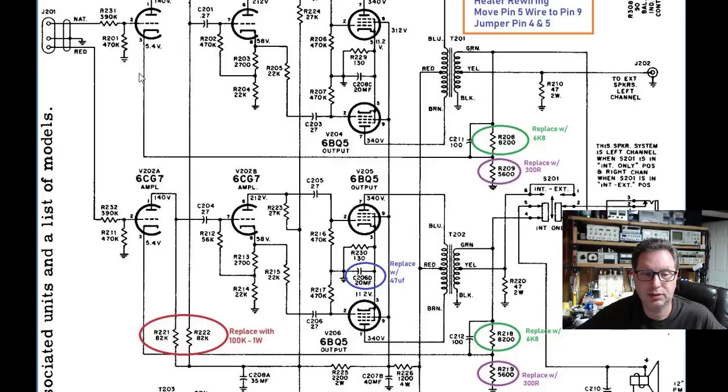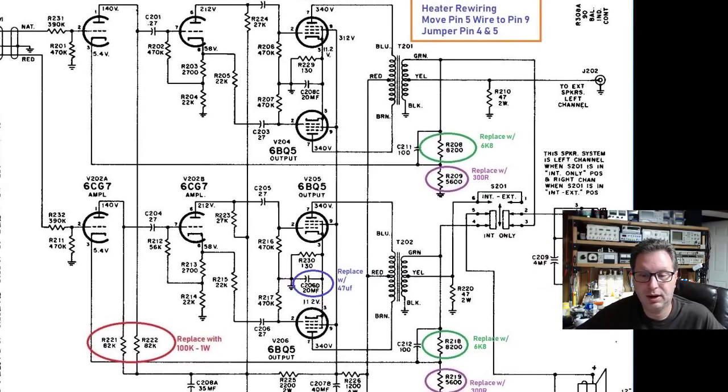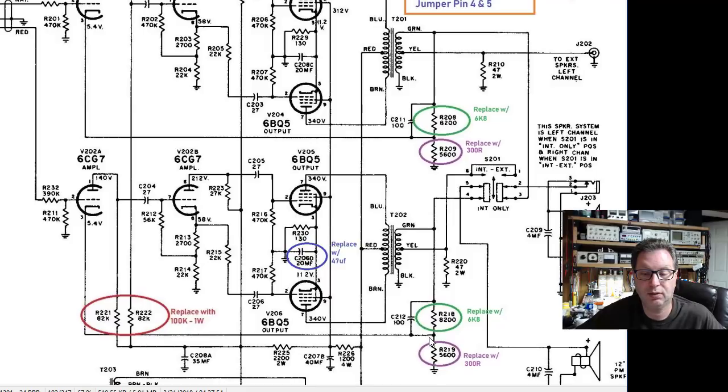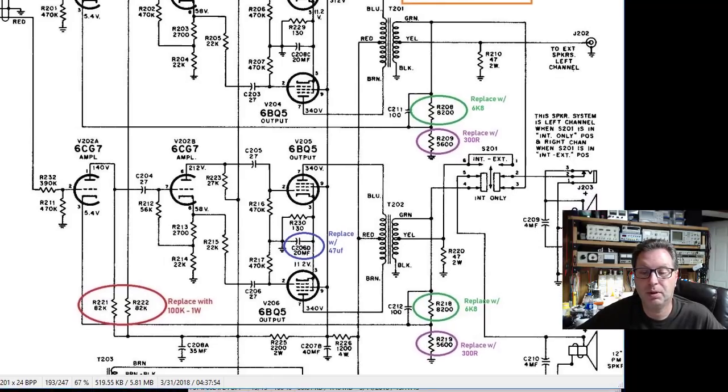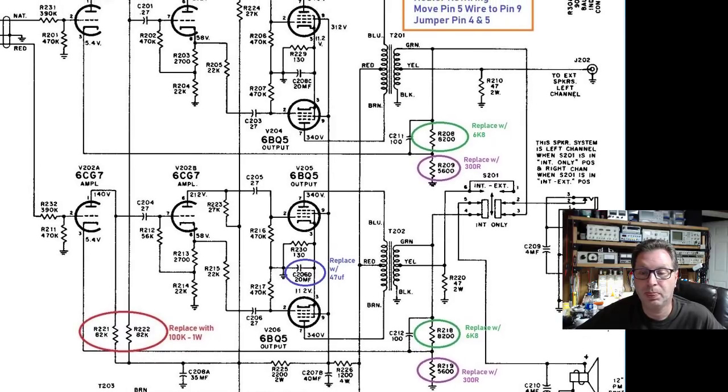A couple things we've done along the way: first and foremost, as you come out of this, you'll notice that the plates here of both these 6CG7s—this would be like left channel and right channel—they both feed down here to these 82K ohm resistors, and I've replaced those with 100K ohm resistors. Likewise over here on the output, you can see here that the cathodes of the 6CG7 feed over to this point. This becomes your cathode resistor right here, so I've replaced this 5600 ohm with a 300 ohm, same down here on the bottom—5600 ohm with 300 ohm.